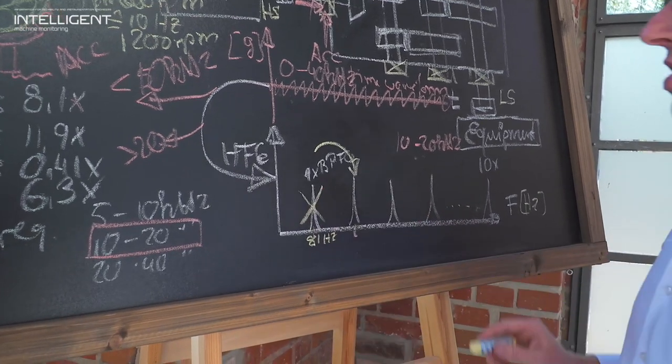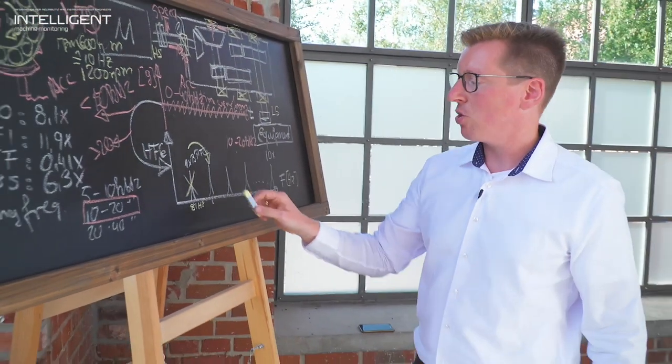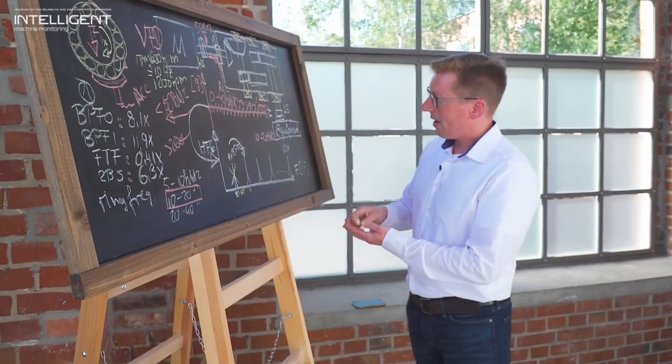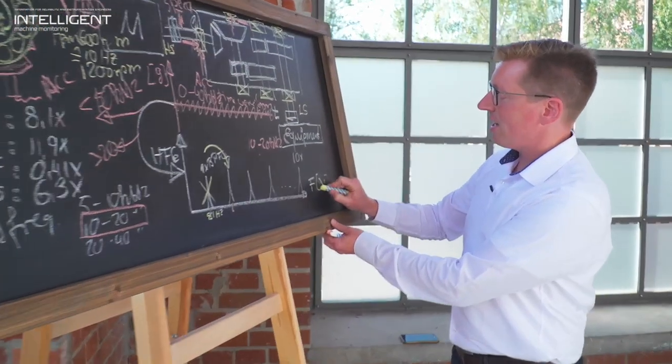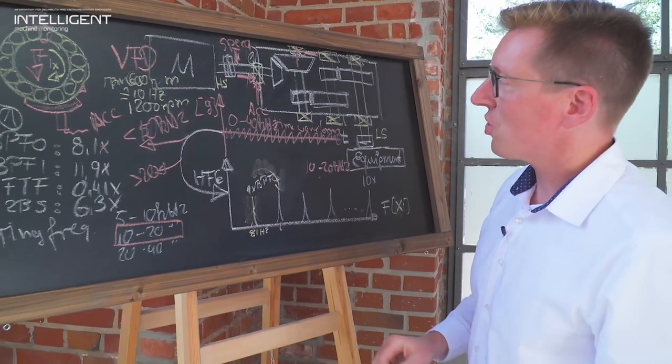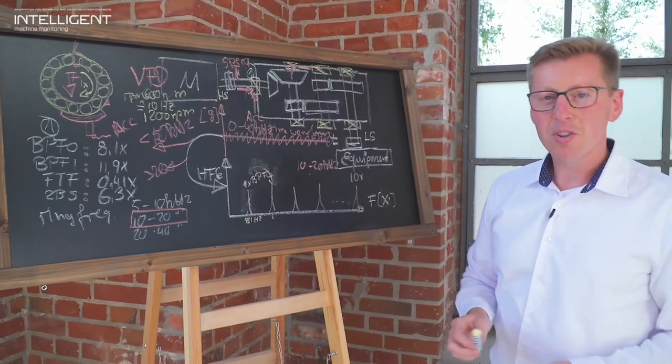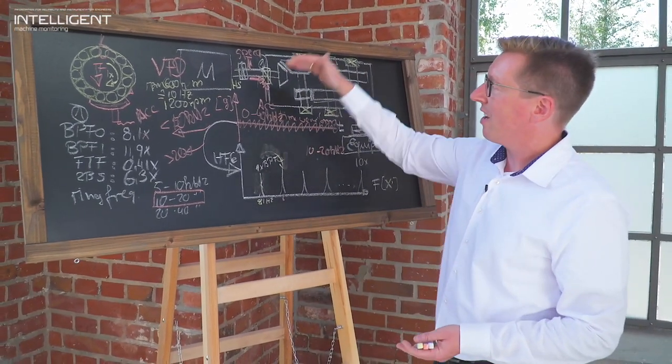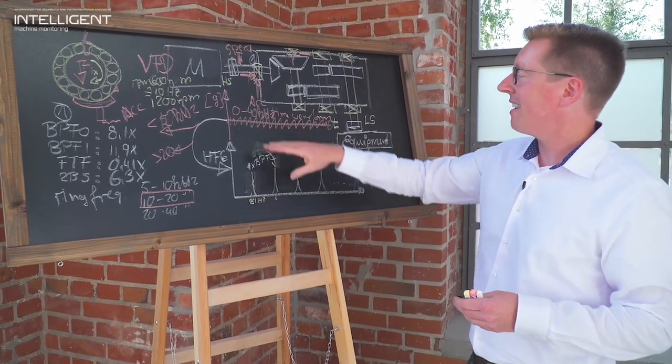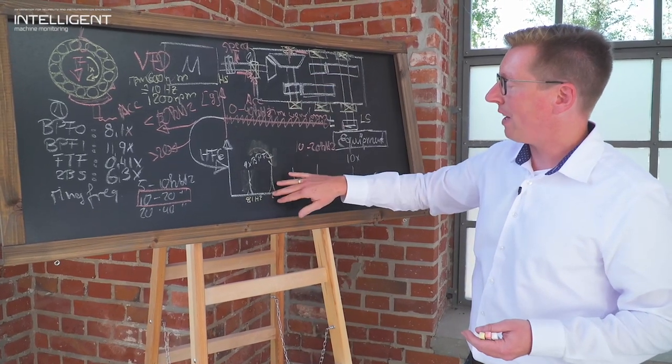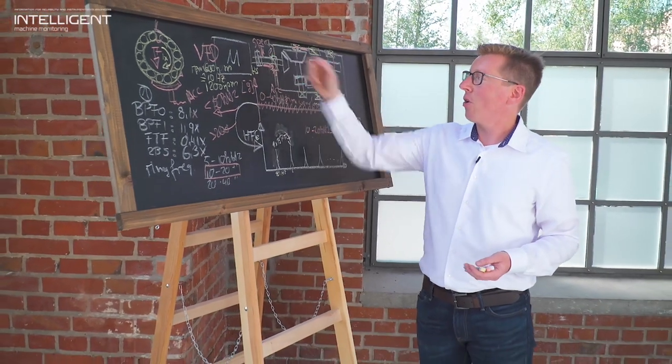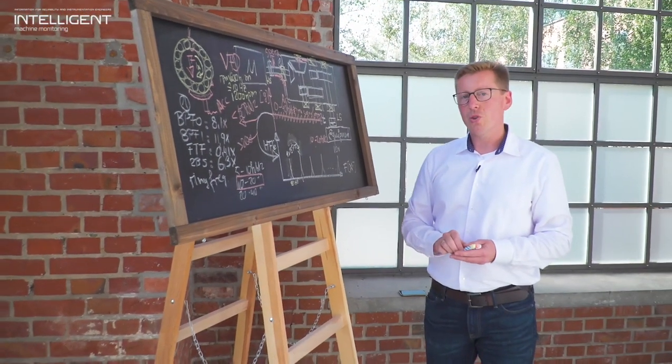But if I now increase the speed to 1200 RPM through this variable speed drive, my one time BPFO would shift to the second position, and we would not easily be able to identify the harmonic set in my spectral data. We eliminate this by calibrating the frequency to show up in orders - orders means harmonics of the run speed. It is very important then to track the speed of every single revolution data recorded, and to accommodate that in the time waveform as well as in the spectral and high frequency envelope failure analytics.